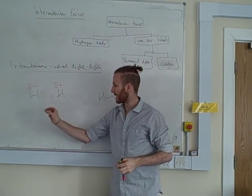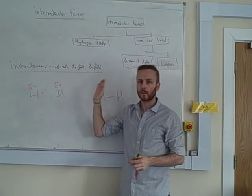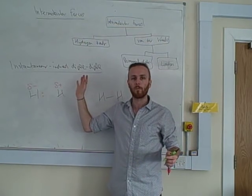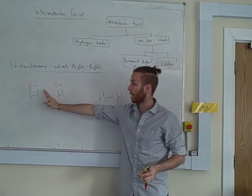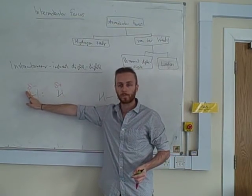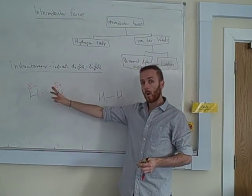So, that's the instantaneous bit, because it happens in an instant. An instant later, these electrons will wiggle back to the middle, and this dipole will be gone. An instant later, maybe the electrons will be over here, and then this will get the negative dipole, and that will get the positive dipole. So, it's instantaneous, because it only happens for an instant.